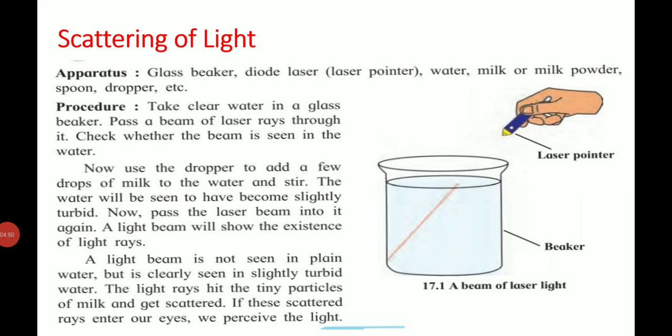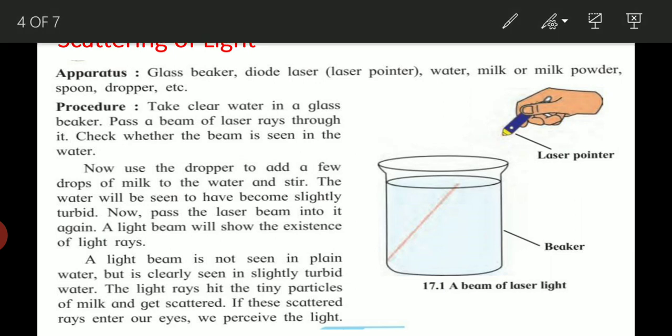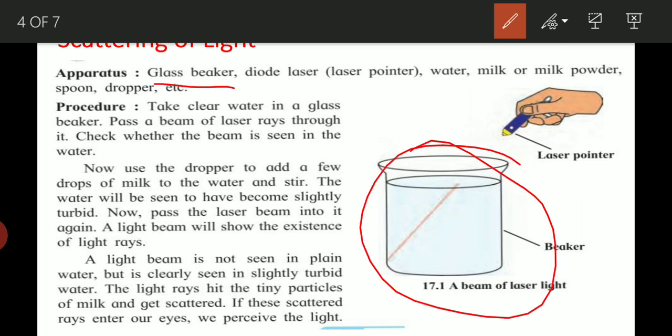Now we come to the main important topic: scattering of light. Before studying it, we will try an activity that you can also do at home. The apparatus needed is: a glass beaker, a diode laser, water, milk or milky powder, a spoon, and a dropper.